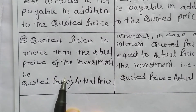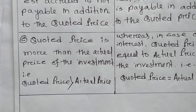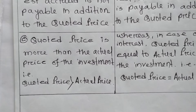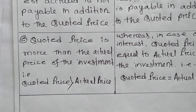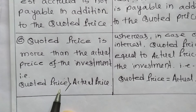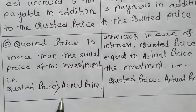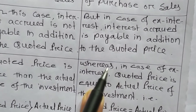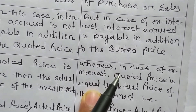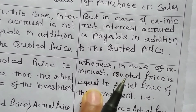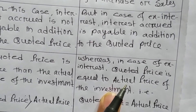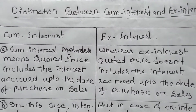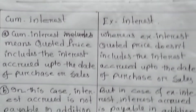Under cum interest, the quoted price is greater than the actual price of investment — for example, rupees eleven thousand. So in cum interest, the quoted price is more or greater than the actual price of the investment. But in the case of ex interest, the quoted price is always equal to the actual cost of the investment. These are the differences between cum interest and ex interest.